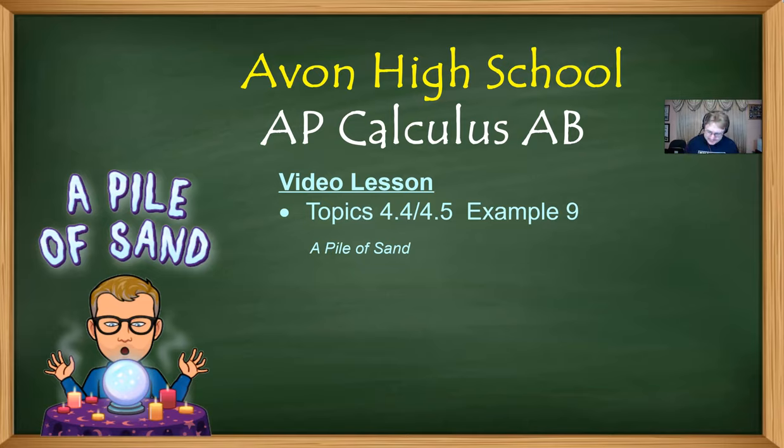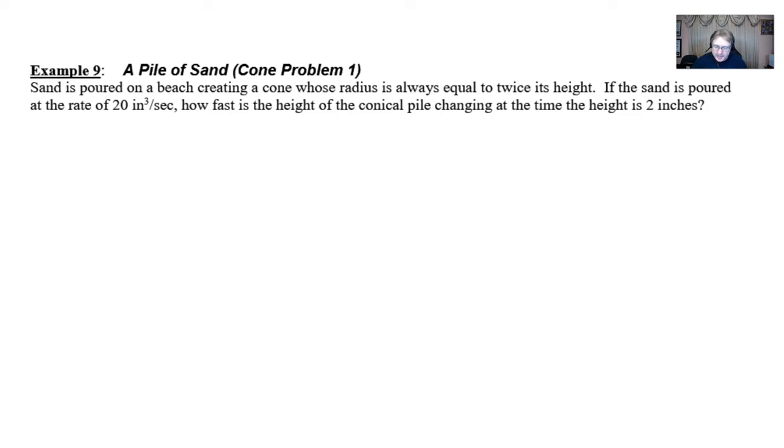Let's take a look at a pile of sand. It says that sand is poured on a beach creating a cone whose radius is always equal to twice its height. If the sand is poured at a rate of 20 cubic inches per second, how fast is the height of the conical pile changing at the time the height is 2 inches?